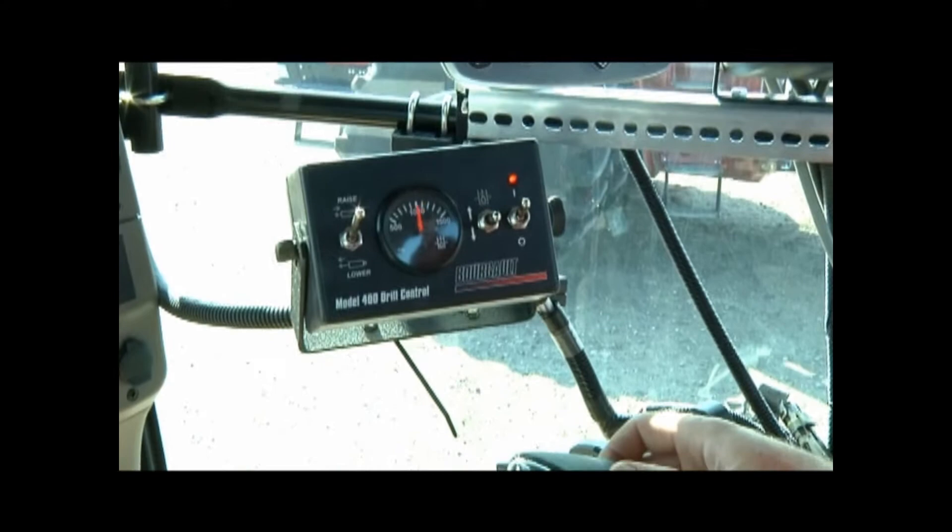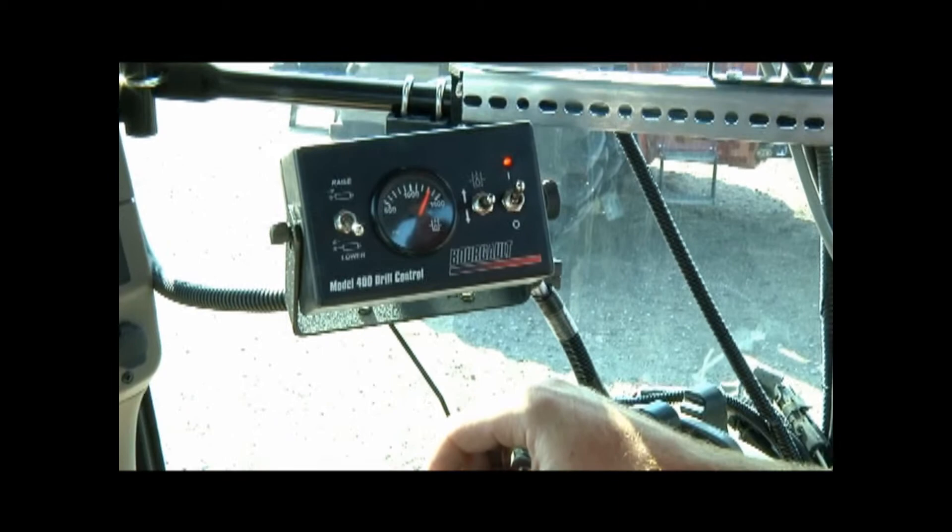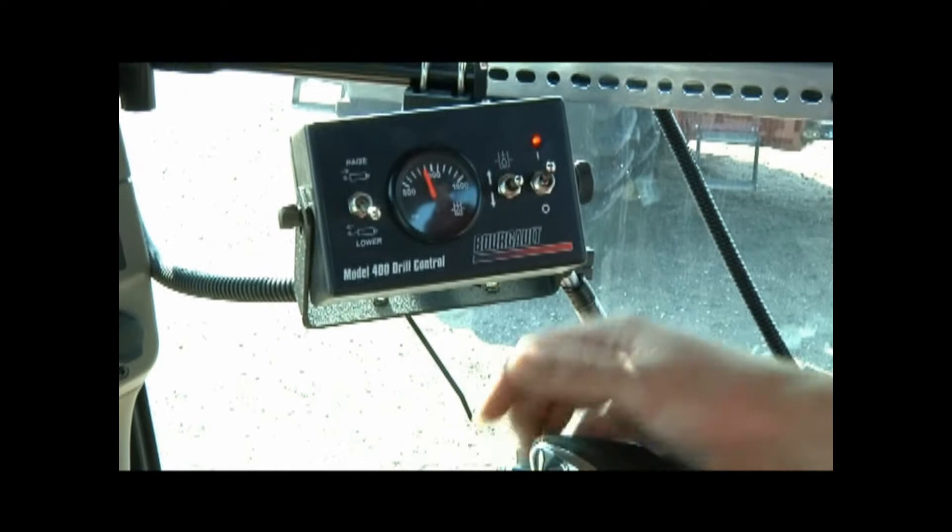After the tractor depth remote hydraulic has been engaged, the larger toggle on the left side controls the raise and lower operation. During operation, the seed openers and mid-row banders will be lifted and lowered simultaneously with this control switch. This is used primarily when turning on the headlands.